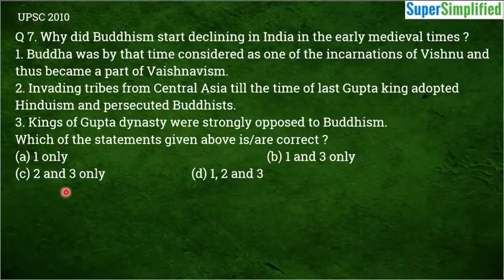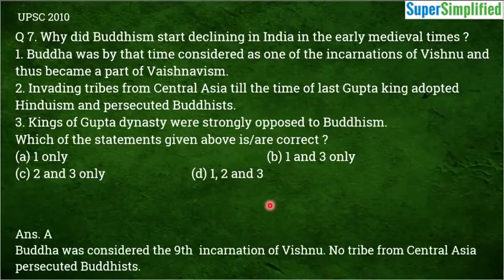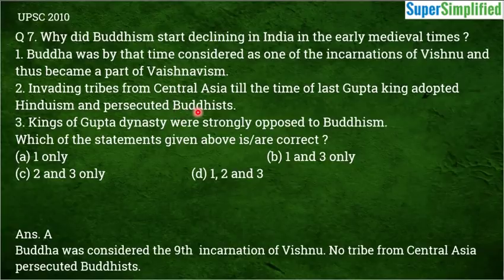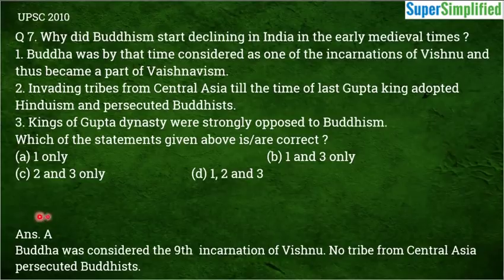The correct answer is A — Statement 1 only. Statement 1 is correct: Buddha being considered the 9th incarnation of Vishnu caused Buddhism to become absorbed into Vaishnavism, so it could not remain a separate sect and its popularity in India gradually declined. Statement 2 is incorrect — the invading tribes from Central Asia did not necessarily adopt Hinduism and persecute Buddhists in the way described. Statement 3 is also incorrect because the Gupta dynasty was not opposed to Buddhism.